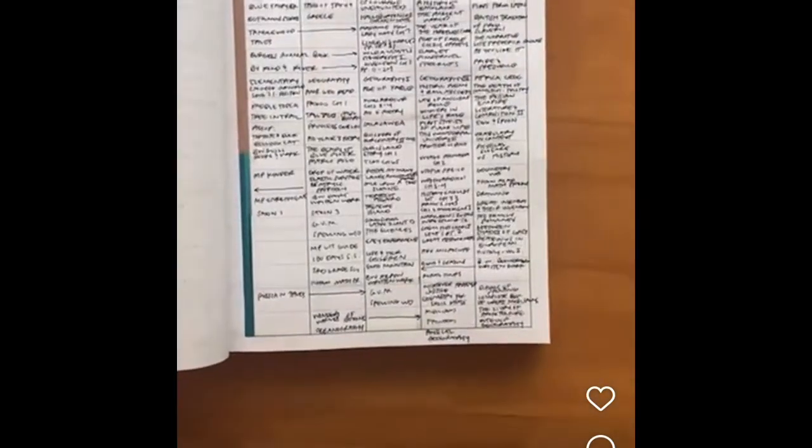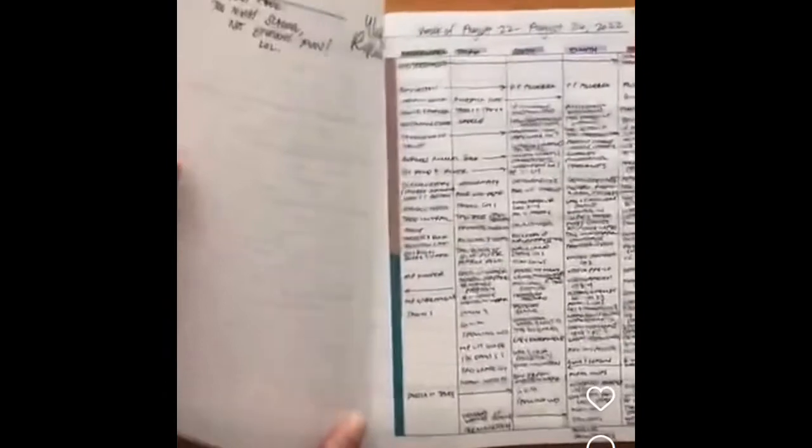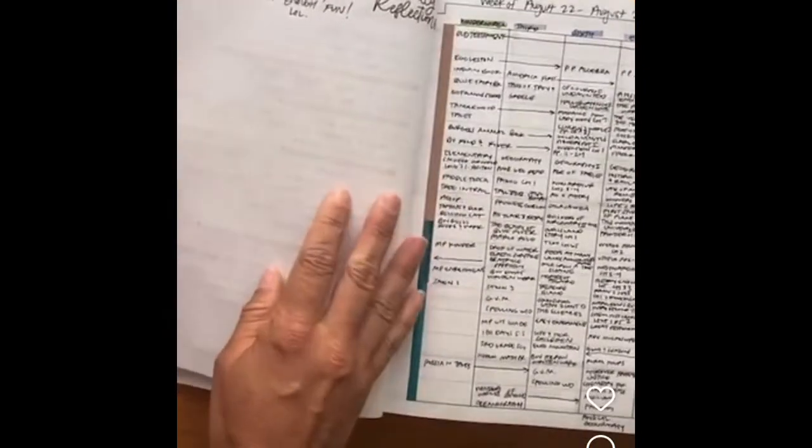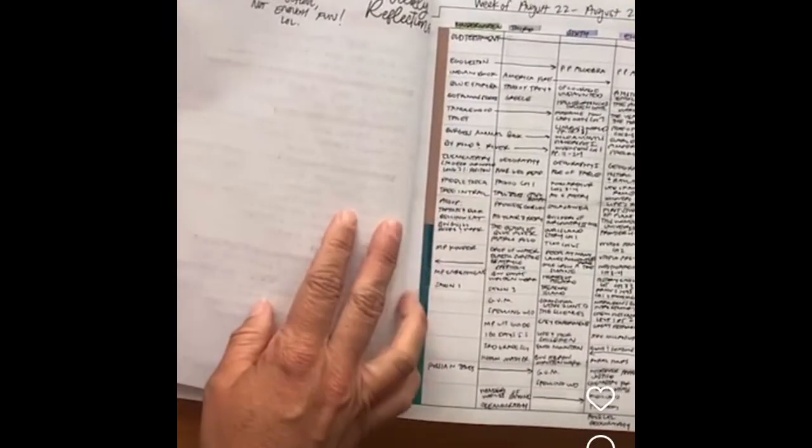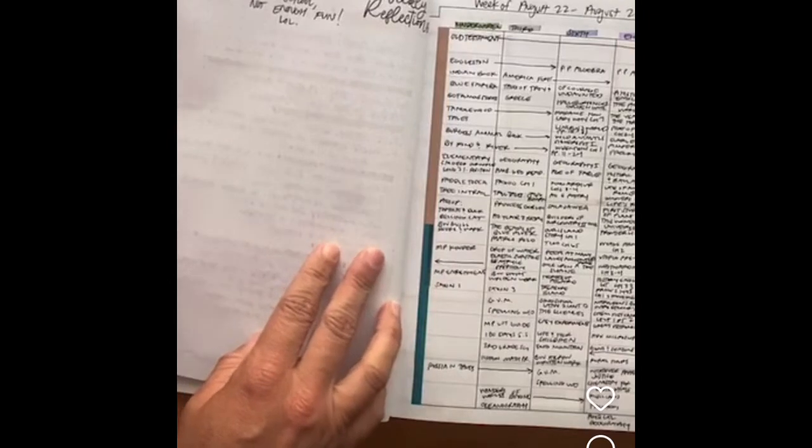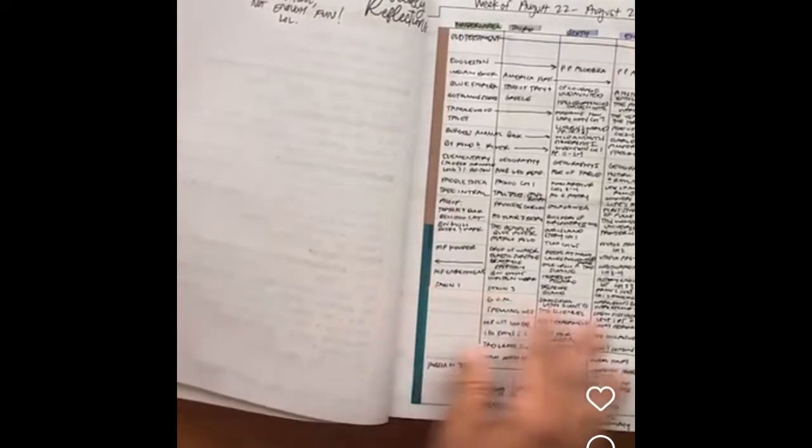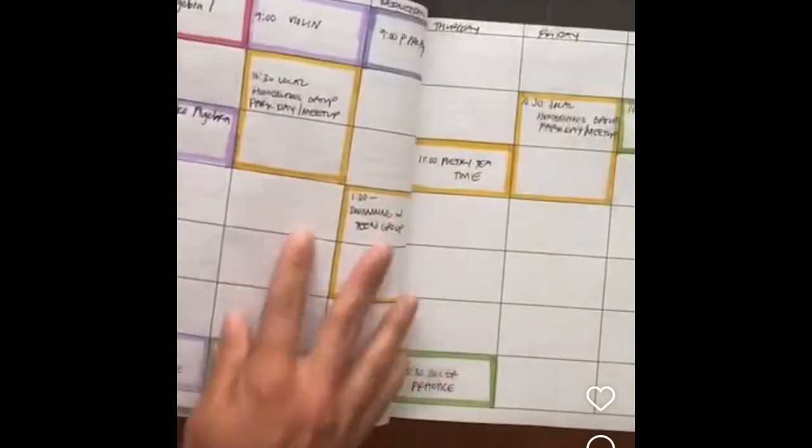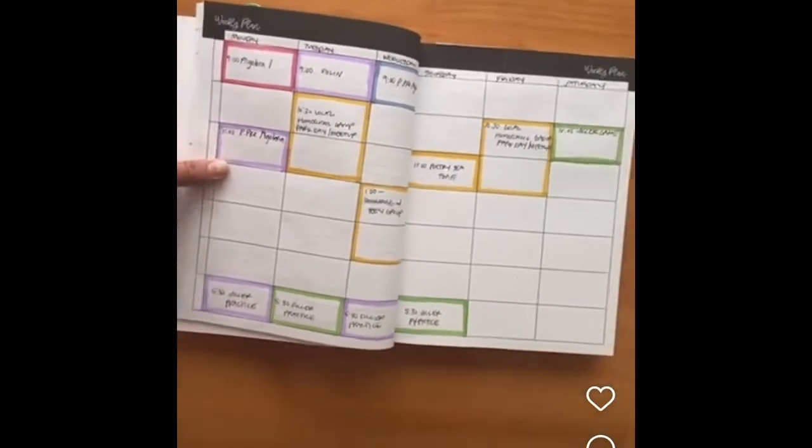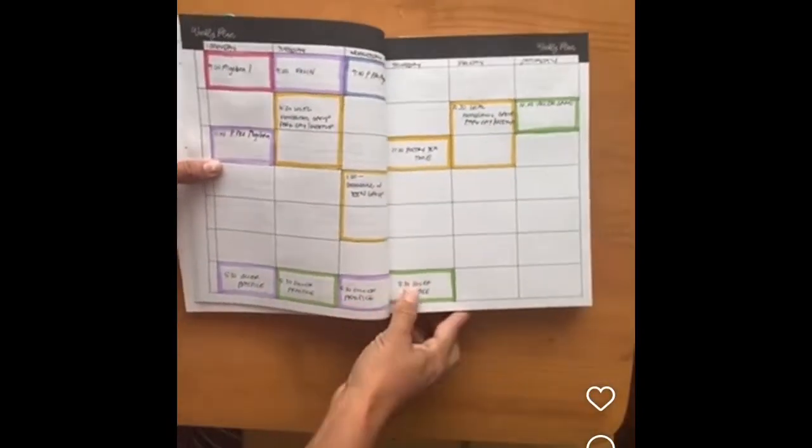And then the other thing, this is just my reflection of last week, is basically we did too much school and not enough fun stuff. So I'll show you what I did with the next pages, which is kind of addressing that. So instead of using this for school, I decided to use it for our schedule.